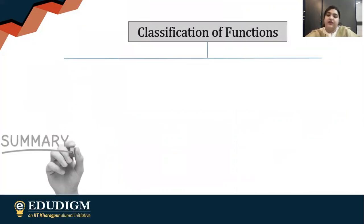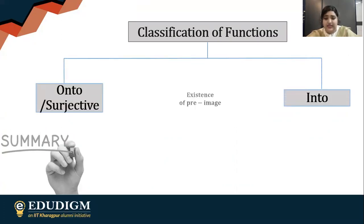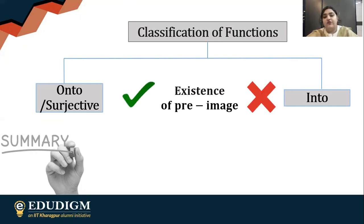Here's what we've talked about so far: onto and into functions. They got generated due to the existence of the pre-image. Onto has this property, whereas into fails to have the existence of pre-images for all elements. We're done with these two concepts of existence and uniqueness of the image.